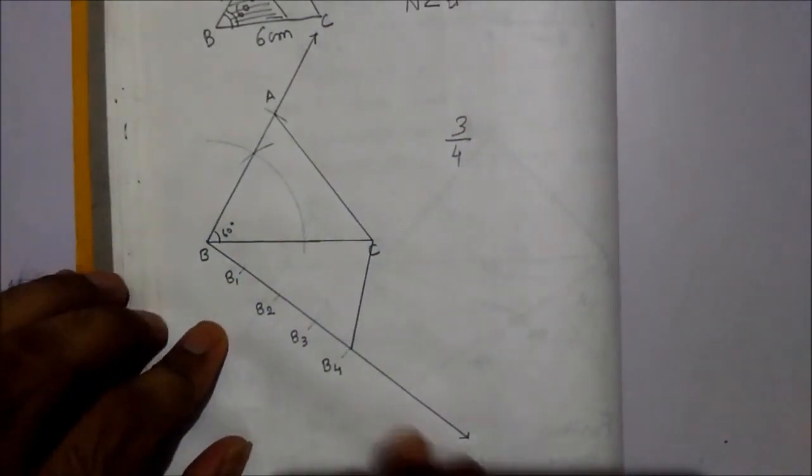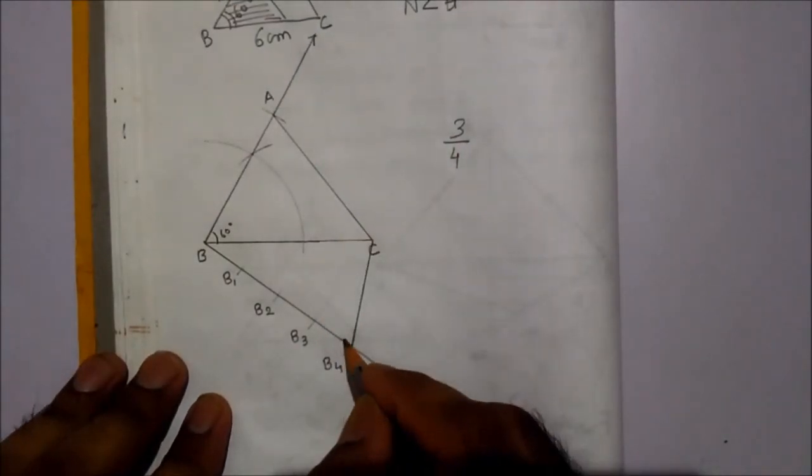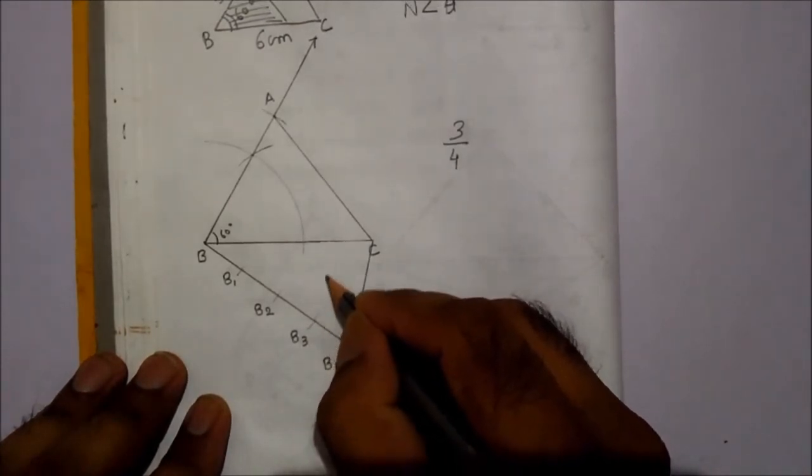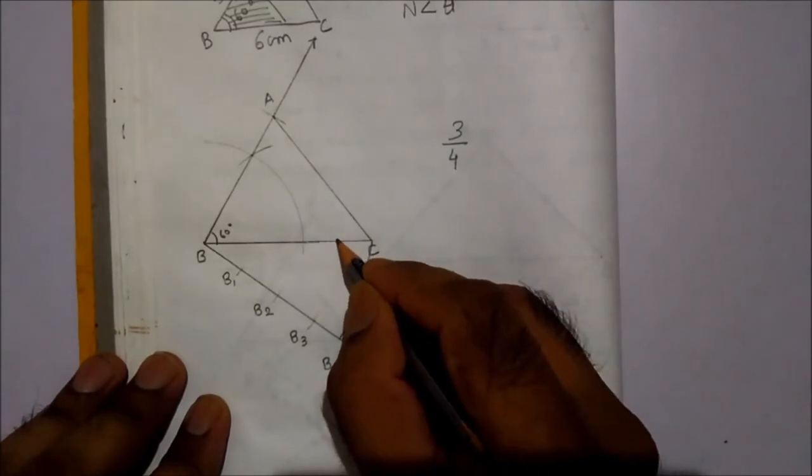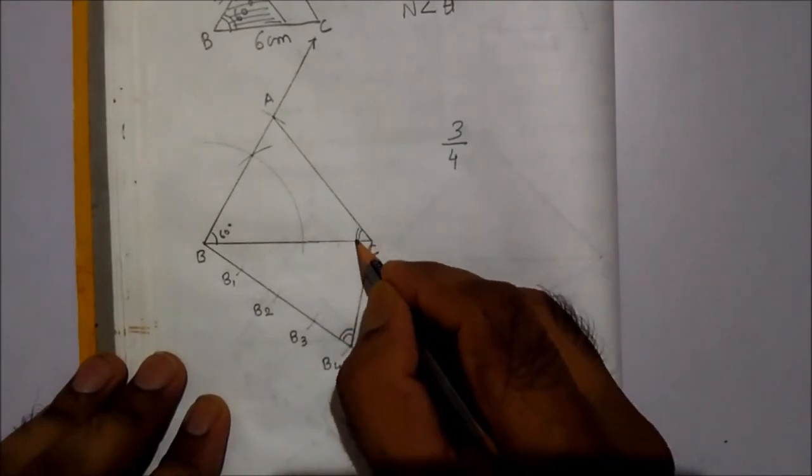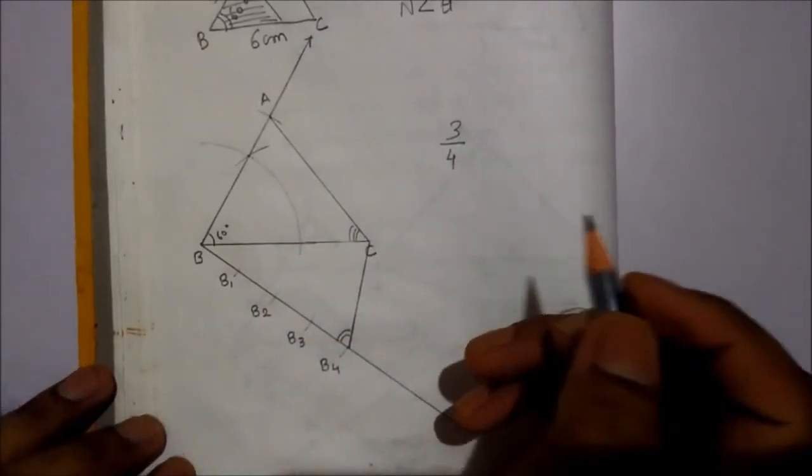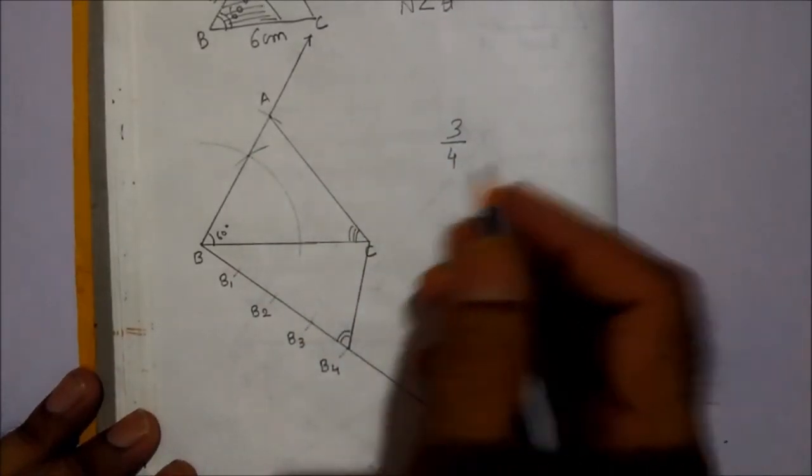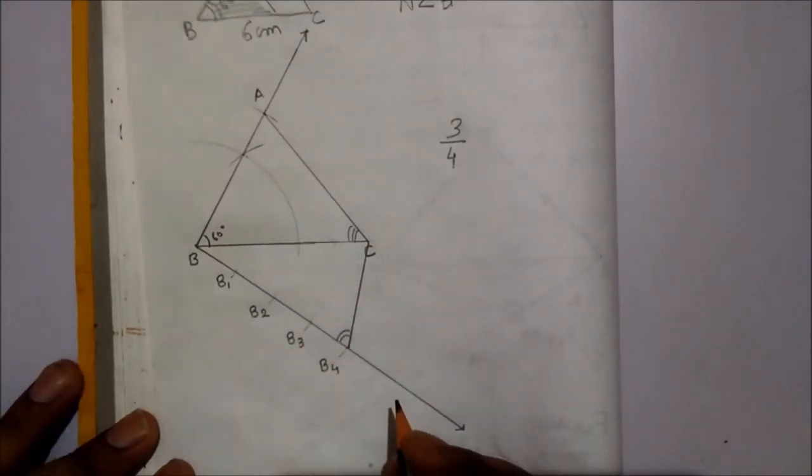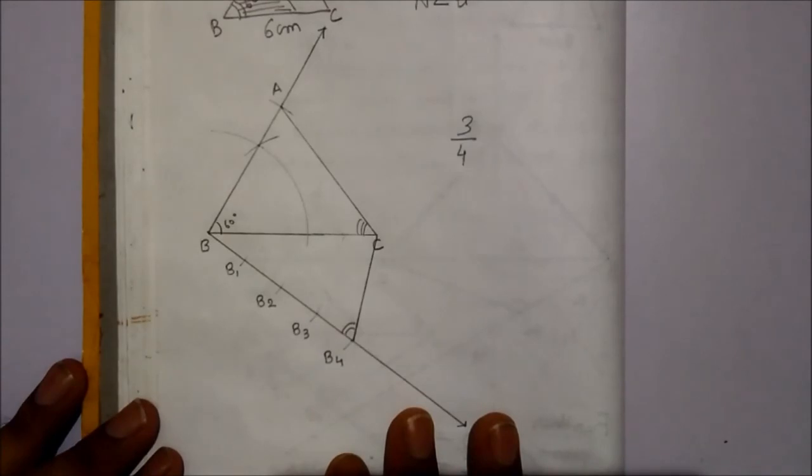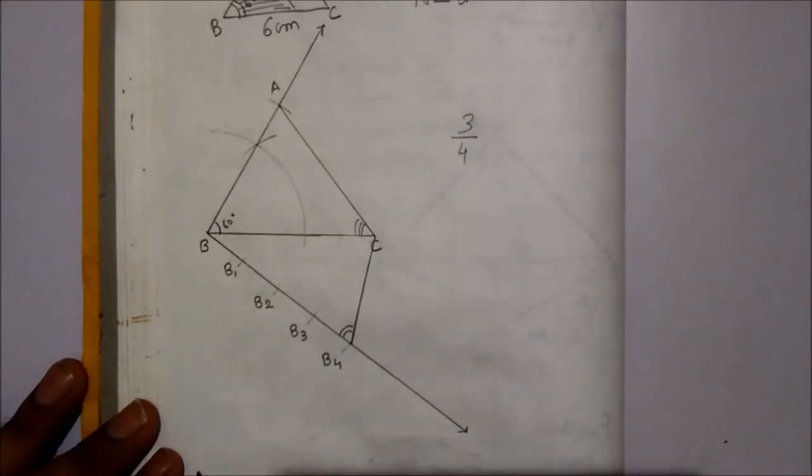And the similar triangle has 3 parts. So we have to draw the same congruent angle from point B3. And from here, this angle we have to draw. So our students, this will be for your practice. The further part, you can do. Or it is homework for you.